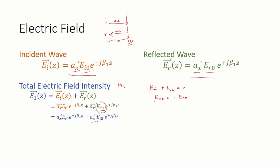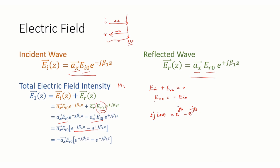Substituting −EI0 for ER0 and taking x-hat and EI0 common outside, we use the formula 2j sinθ = e^(jθ) − e^(−jθ). We need some modification: the e^(+j) term should come first, so take the minus outside to fit the formula. Substituting the formula, we get the total electric field intensity in medium 1 as E1(z) = −x-hat · EI0 · 2j sin(β₁z).